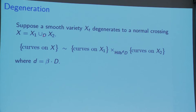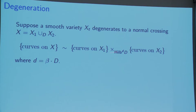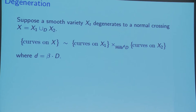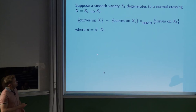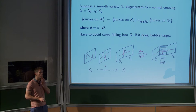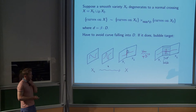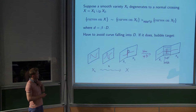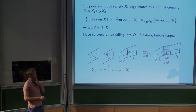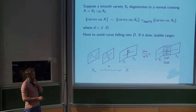Morally, curves on this central fiber are curves on one piece times curves on the other, but fiber product over D — they must meet in the middle with the same boundary on the divisor. That works fine as long as your curves have a boundary value on the divisor — as long as the curve intersects the divisor in a finite number of points. But what you don't want is the curve to fall into the divisor, which is problematic. If that happens you blow up the total space of the family and get a new picture with an exceptional divisor.